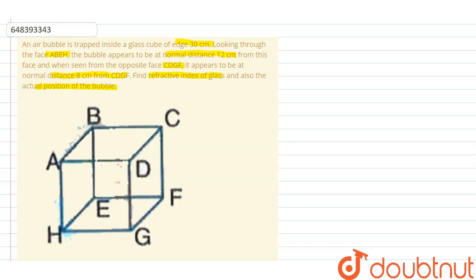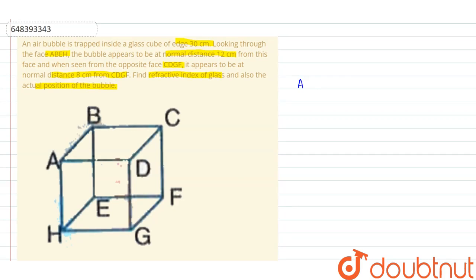The apparent distance of bubble from refracting surface ABEH equals X by mu, which is given as 12 cm. So 12 equals X by mu. Let's take this as equation number 1.